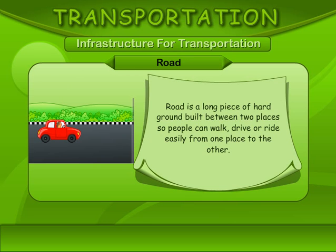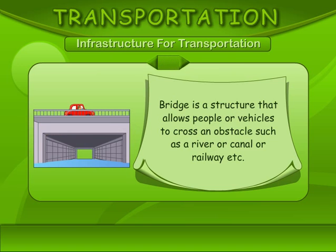Road. A road is a long piece of hard ground built between two places so people can walk, drive, or ride easily from one place to another. Bridge. A bridge is a structure that allows people or vehicles to cross an obstacle such as a river, canal, or railway.